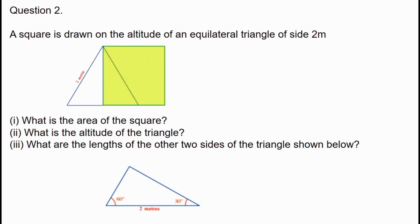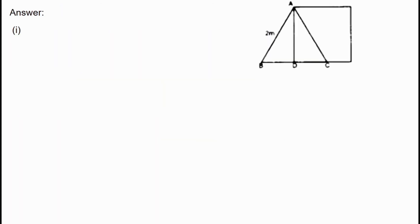Now we will look at the vertical triangle. This is our figure — the triangle is drawn on the square, and this is the height of the triangle. We have to draw the base BC.